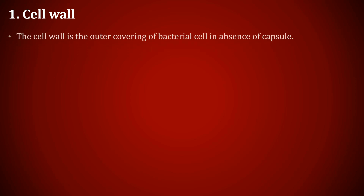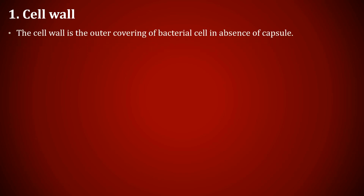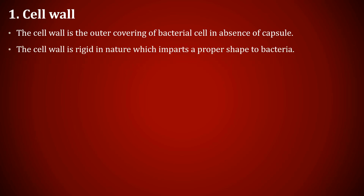The first one is cell wall. Cell wall is the outer covering of the bacterial cell in the absence of capsule. The cell wall is rigid in nature, which imparts a proper shape to bacteria. Bacteria are mainly of three shapes: coccus shape, rod shape, and spiral shape, and these shapes are dependent on the rigidity of the cell wall. The cell wall encloses all the internal parts of the cell.